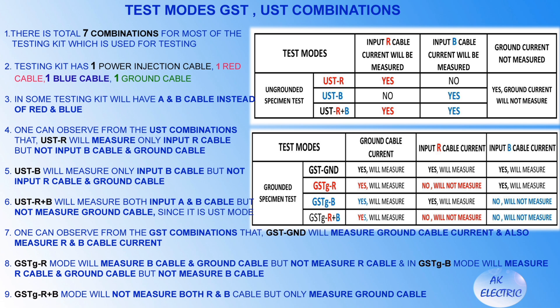In this slide we will see the test modes of GST and UST combinations. There are totally seven combinations from most testing kits used for testing purposes. The testing kit has one power cable injection, one red cable, one blue cable, and one ground cable. In some testing kits, A and B cables are used instead of red and blue cables. UST R will measure only the input red cable, but not the input blue cable and ground cable.